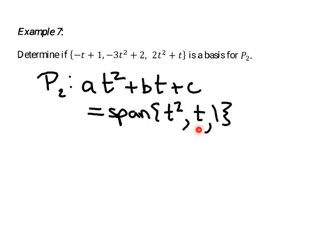And these are linearly independent. There's no way to combine, say, t and 1 to get t squared. None of these vectors are a linear combination of the other ones. I bring that up just to emphasize that P2 has dimension 3. From that previous example, we know that the dimension of P2 is 3.